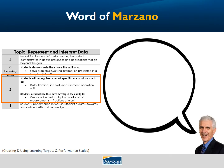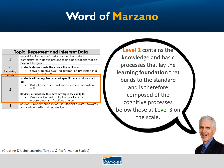Let's hear what Dr. Marzano has to say about the levels on the scale. Level 2 contains the knowledge and basic processes that laid the learning foundation that builds to the standard, and is therefore composed of the cognitive processes below those at level 3. So really thinking of level 2 as that foundational knowledge.